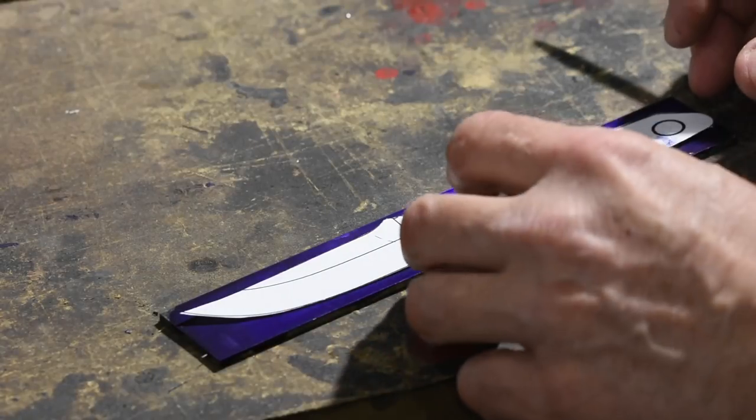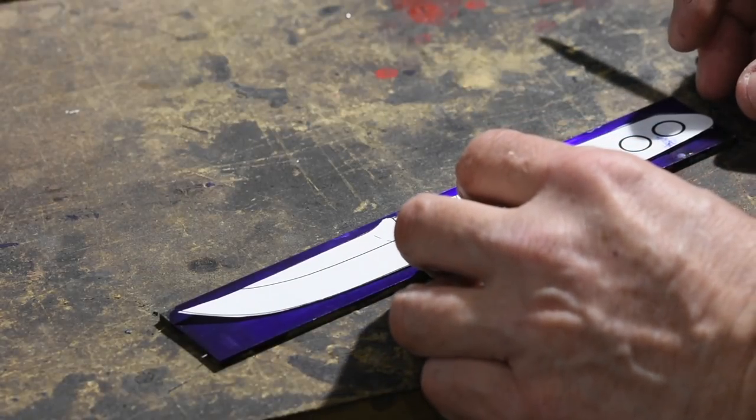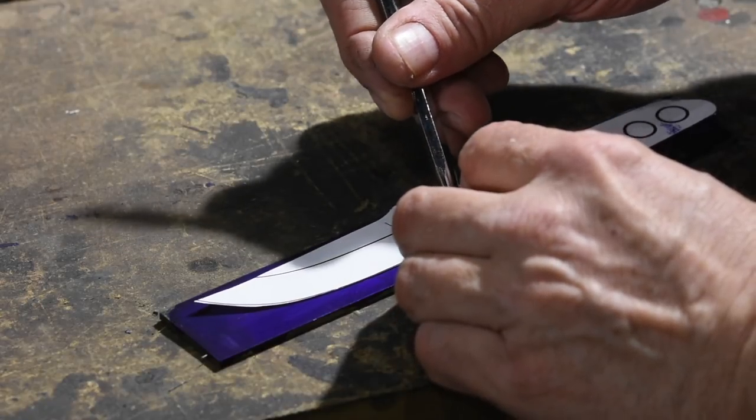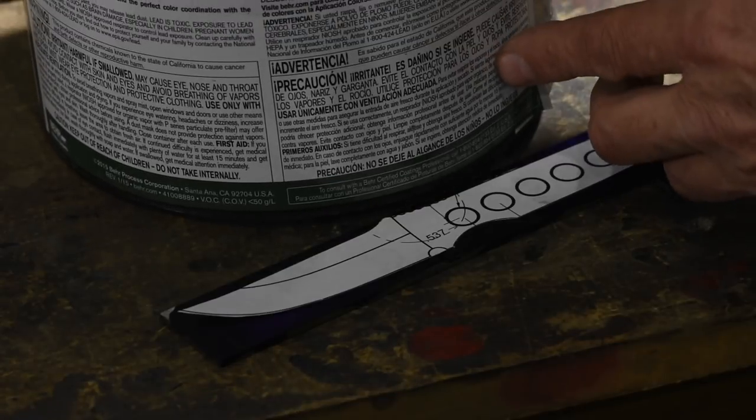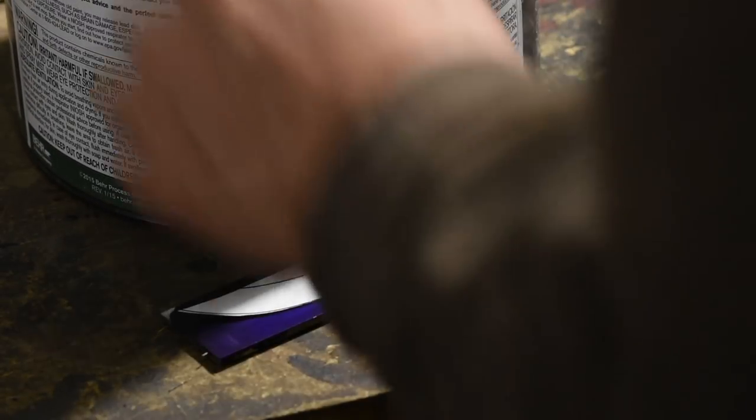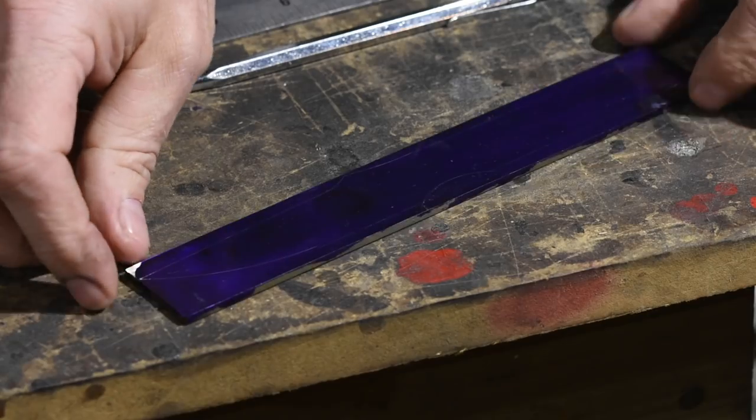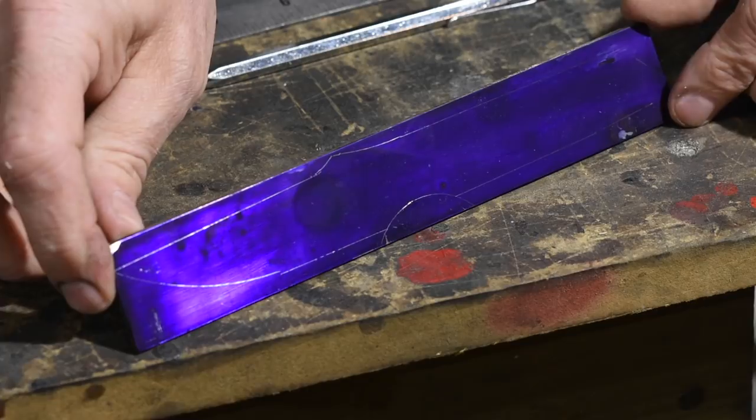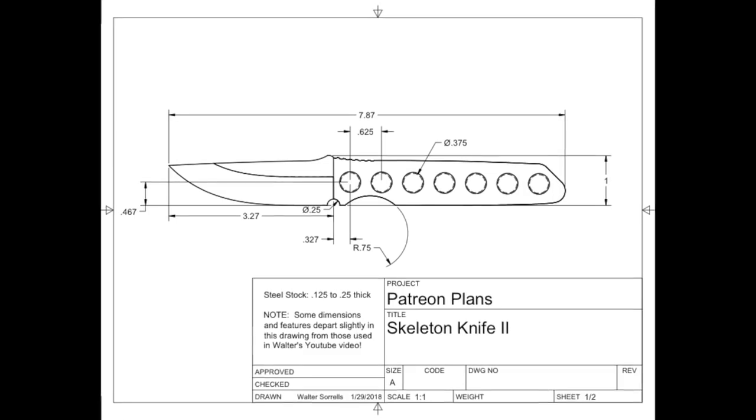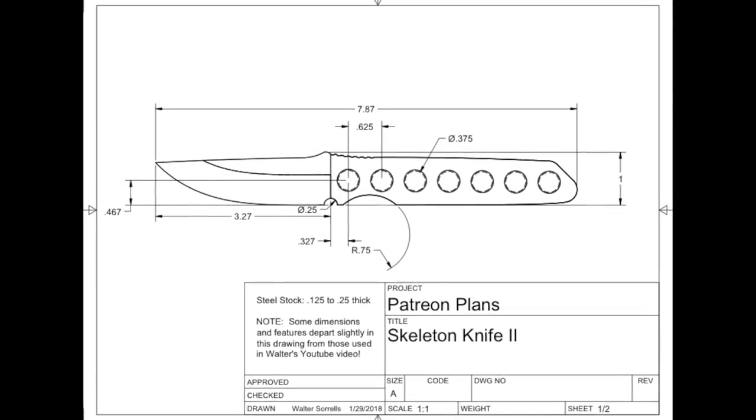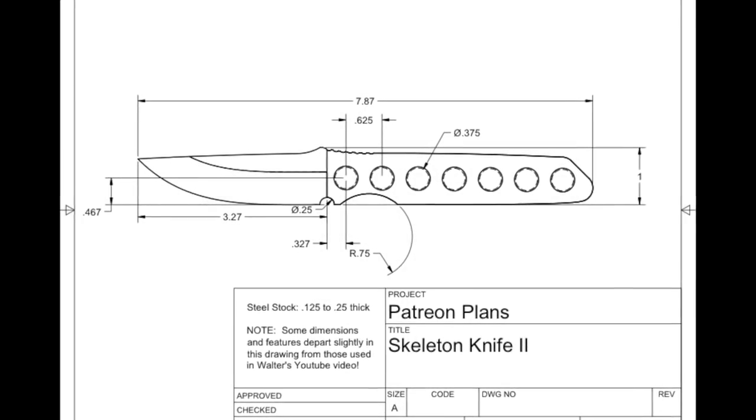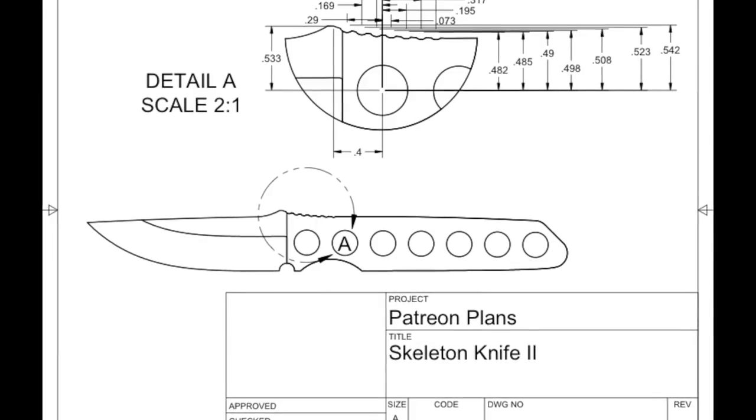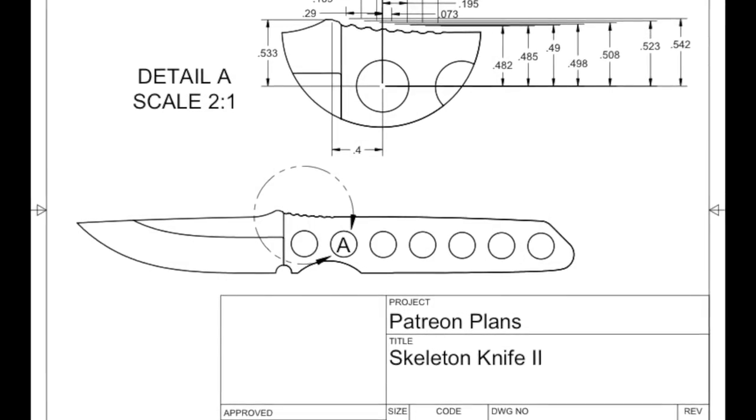I'll use a jar lid and a paint can to transfer some arcs to the drawing. Again, we're not looking for perfection here, it's just a reference to help us out on the belt grinder. Incidentally, when laying out the design, I'm going to be working from a plan that you can find on my Patreon page. Anybody who becomes a patron on Patreon can access the plans for this and plenty of other projects I've done on YouTube.